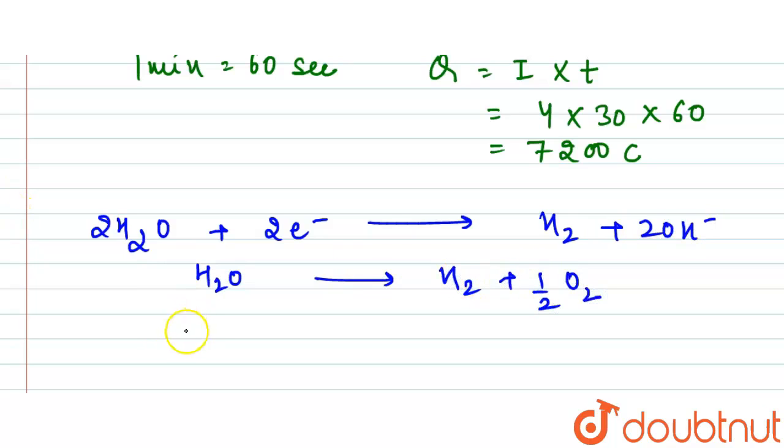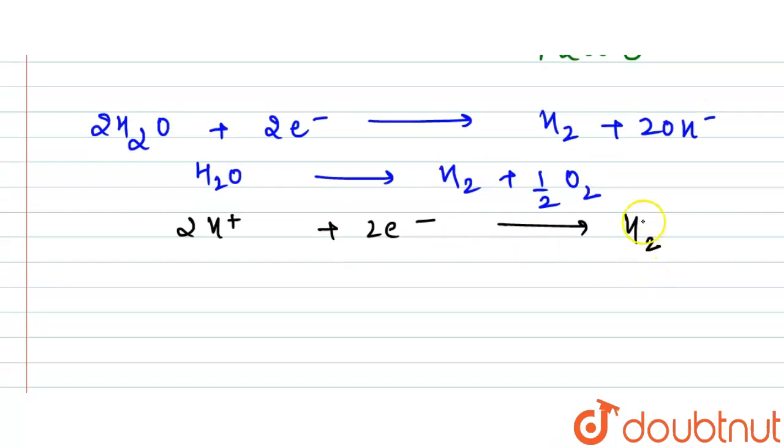Or we can write it as H2O gives H2 plus half O2, or another way is 2H plus plus 2 electrons gives H2. Here one mole of H2 relates to two mole electrons, and if it relates to two mole electrons, it means it relates to two Faradays of electricity.